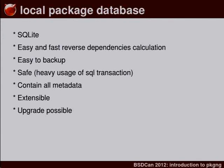For the local database we decided to use SQLite, so you have a single file with everything. It's relational, so we can do reverse dependency calculations easily and quickly. It's easy to backup — just take the file. We also provide a tool to create a backup as a non-SQLite file if you don't trust SQLite. It's safe: we use transactions everywhere so that if something goes wrong during installation or upgrade, you won't have a broken database — everything rolls back to the previous good state.